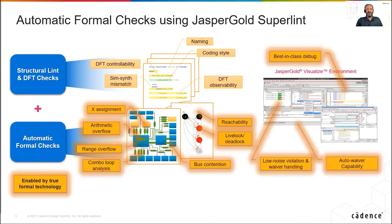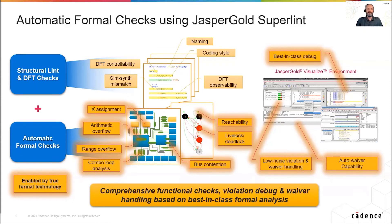Designers can observe failure waveforms using the same Visualize debug environment that they used when exploring the design. Resilient waivers make it easy to ignore certain warnings as the RTL is changing, and automatic waivers can be generated to reduce linting noise. This comprehensive set of functional checks, violation debug, and waiver handling is based on best-in-class formal analysis.